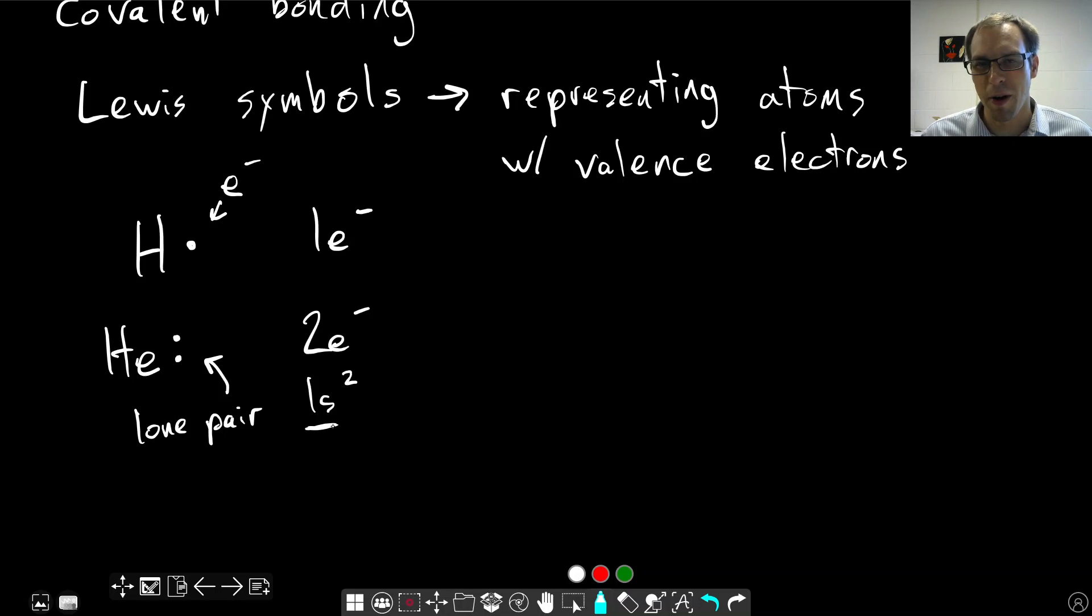All right. Let's jump down a row in the periodic table. These are elements that we see a lot. Things like carbon and nitrogen and oxygen. And let's think about how do we write the Lewis structures for these atoms. Well, let's think again about the valence electrons.